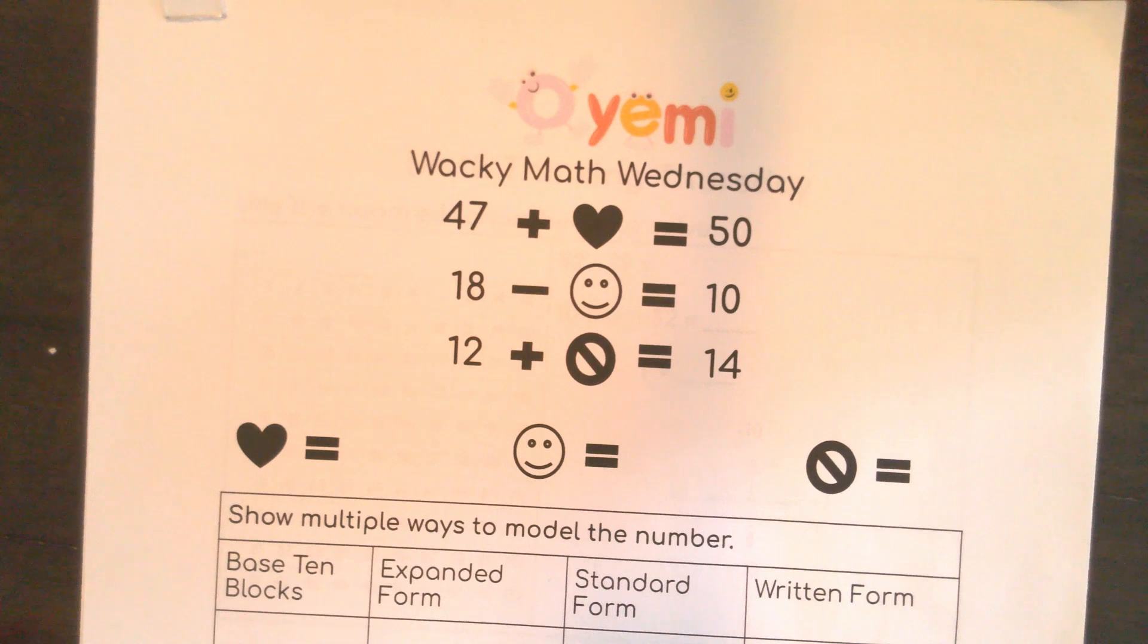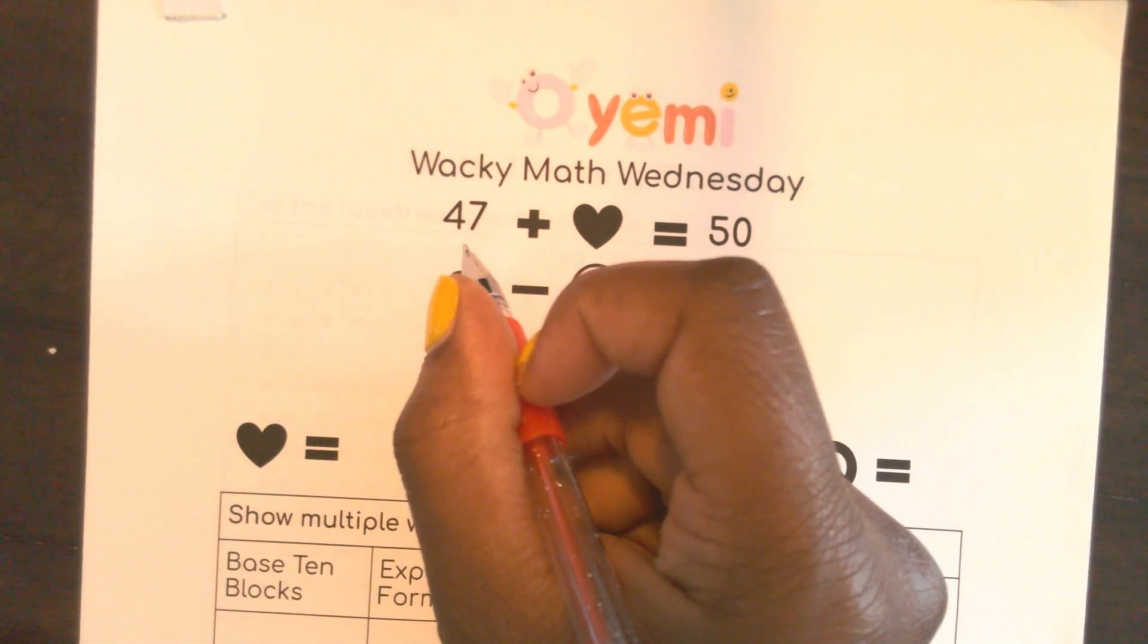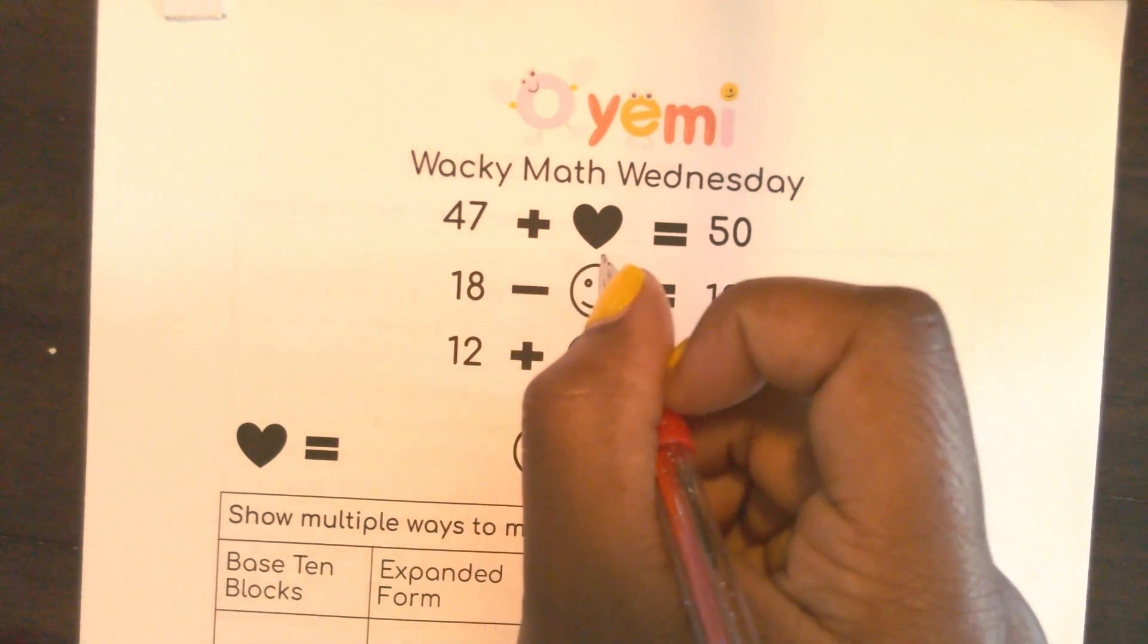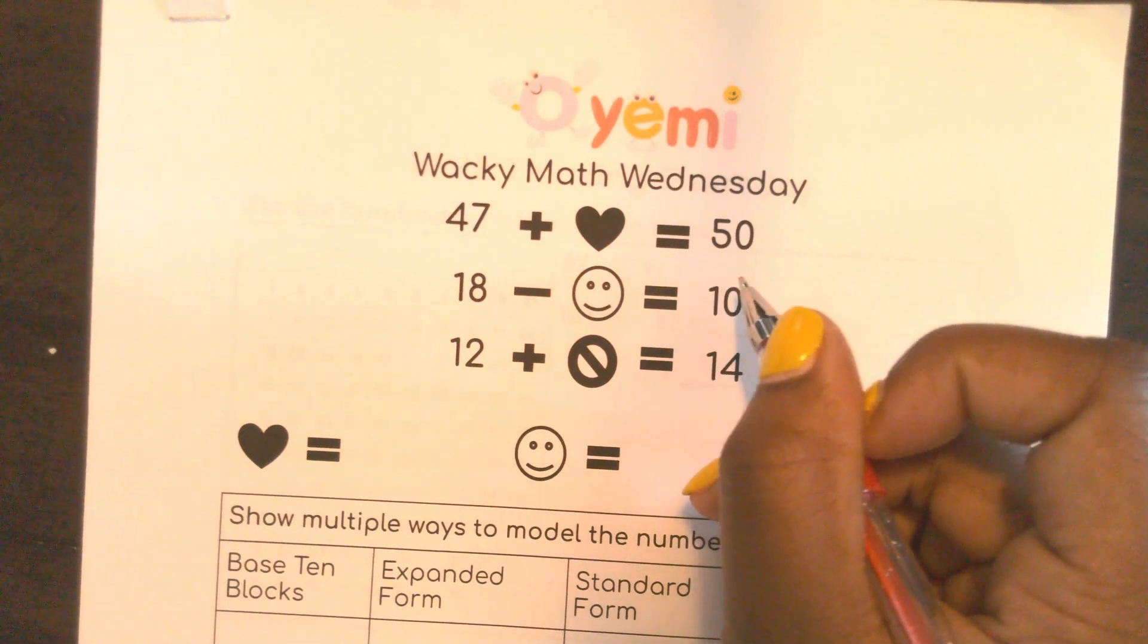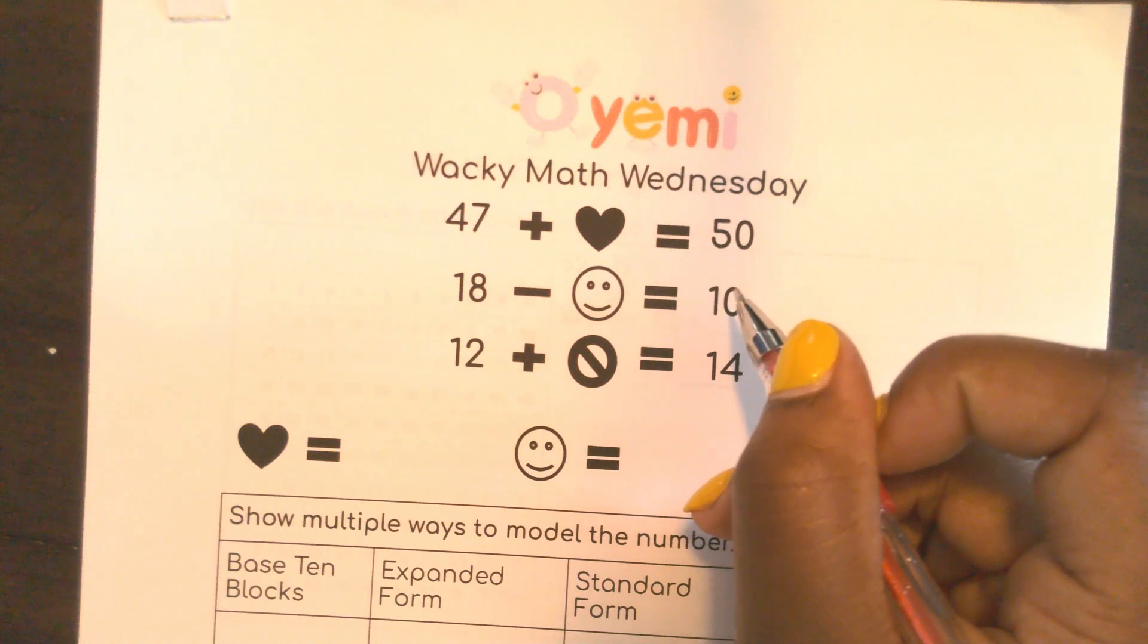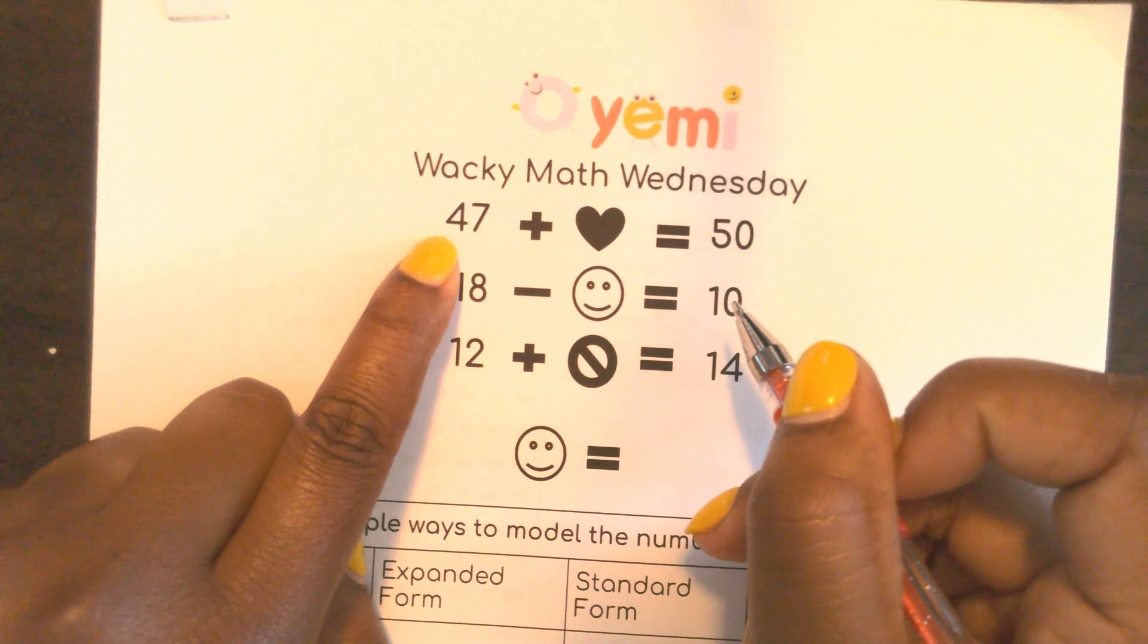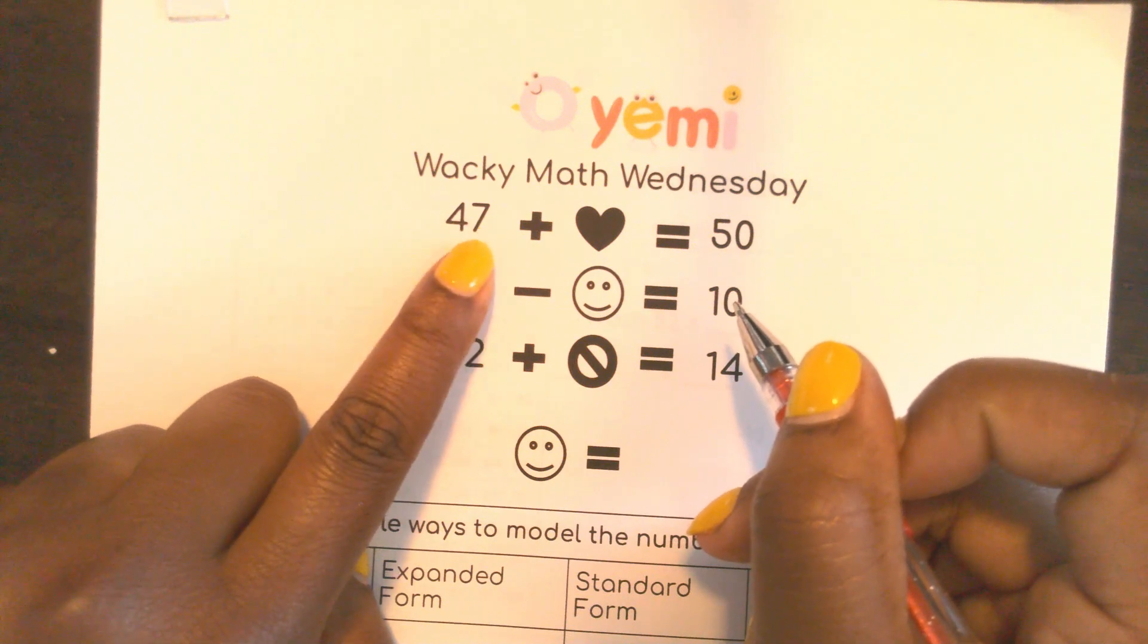Here I have 47. How much more do I need to get to 50? This is really helping us with those 10s. So if I'm at 47, I already have four 10s and I have seven ones.